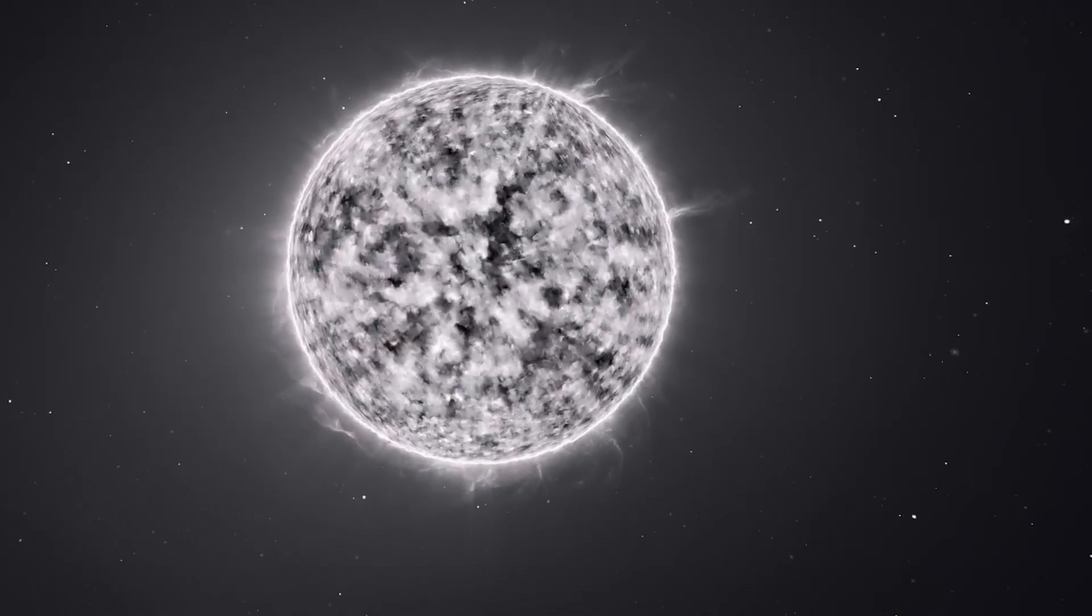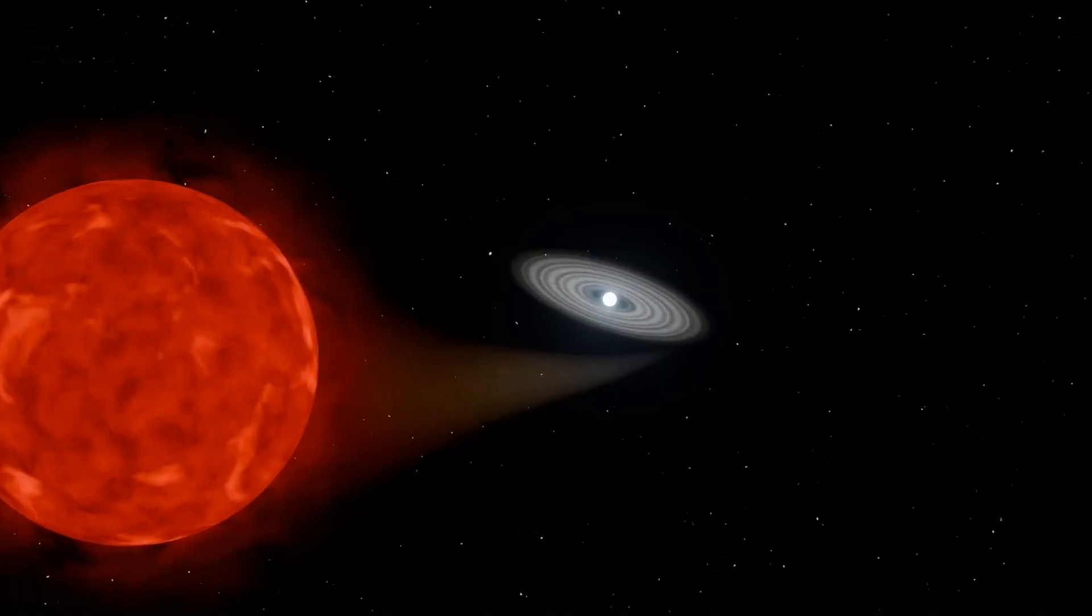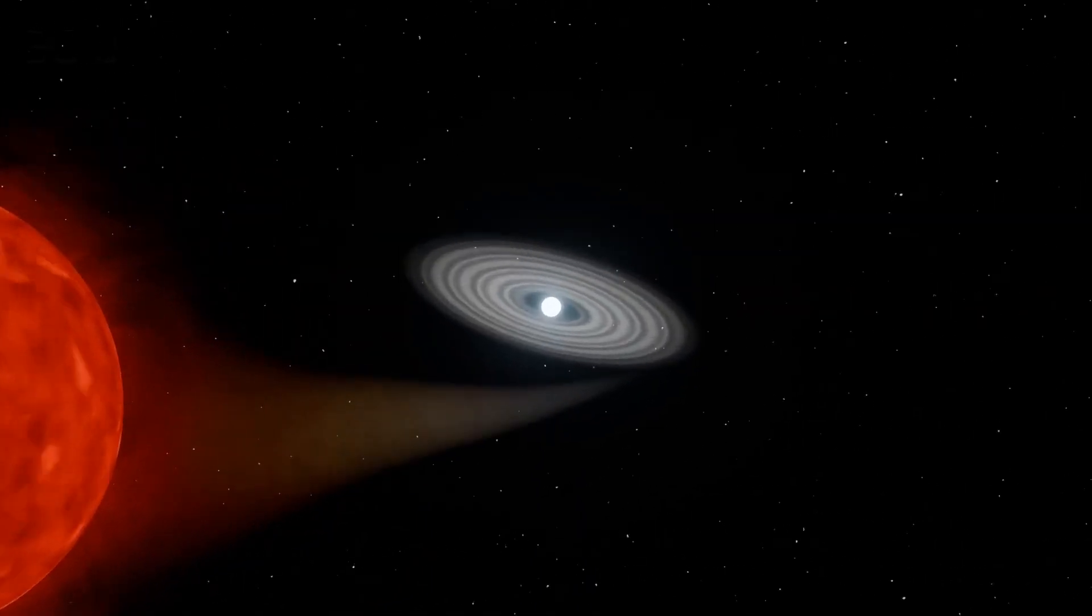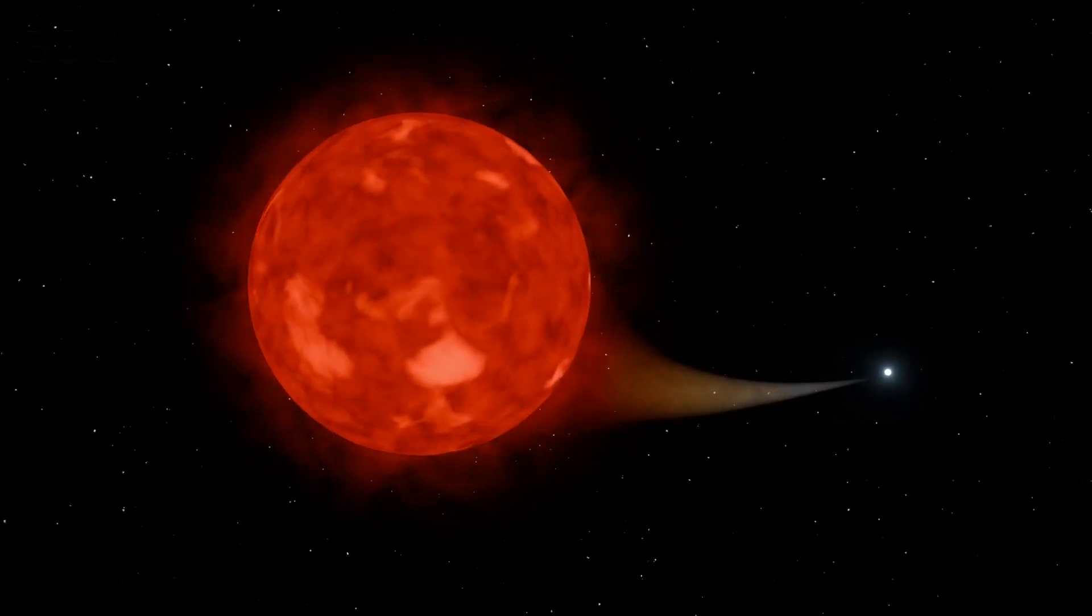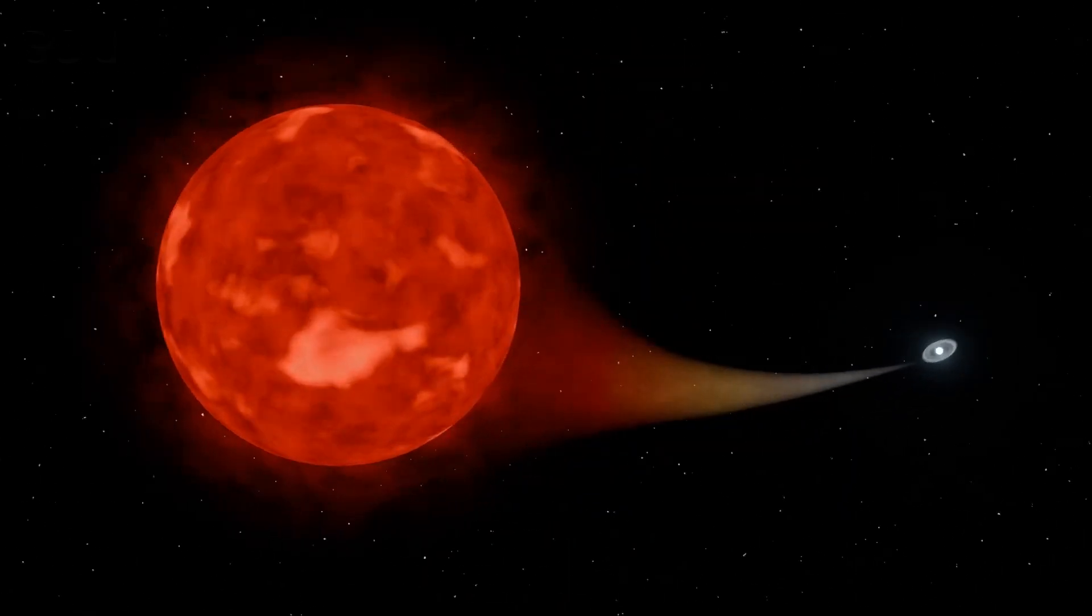One of the stars is a white dwarf, basically a star that's burned out and retired. The other is a red giant, a much bigger star nearing the end of its life.